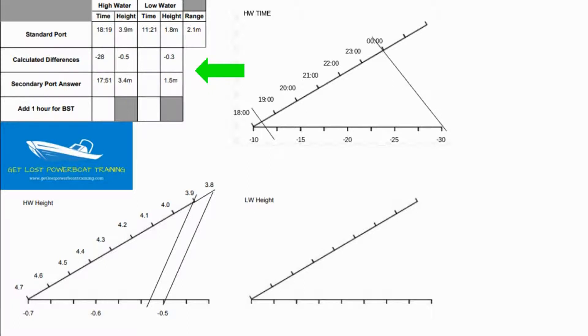We're working in UT so we don't need to add an hour. So I have three bits of information now for my tidal curve. I have a time of high water for the boxes at the bottom, I have a height of 3.4 metres for the scale at the top and I have a height of 1.5 metres for the scale at the bottom and I can now fill out the tidal curve and use it as normal for my secondary port.